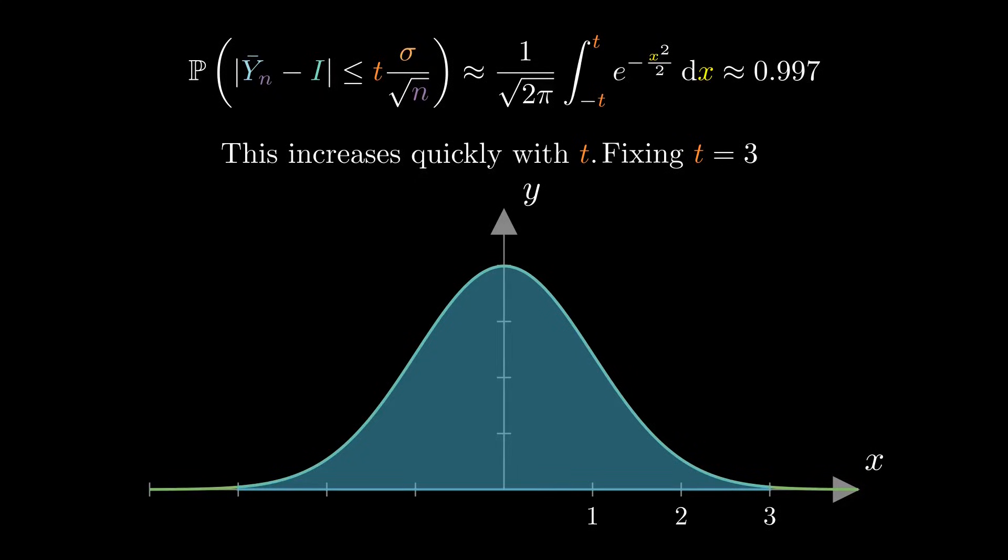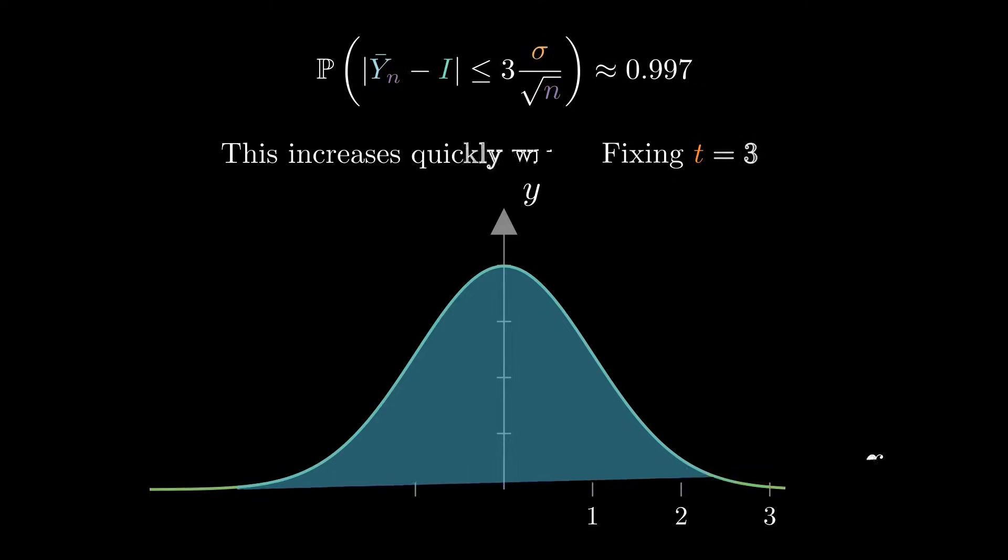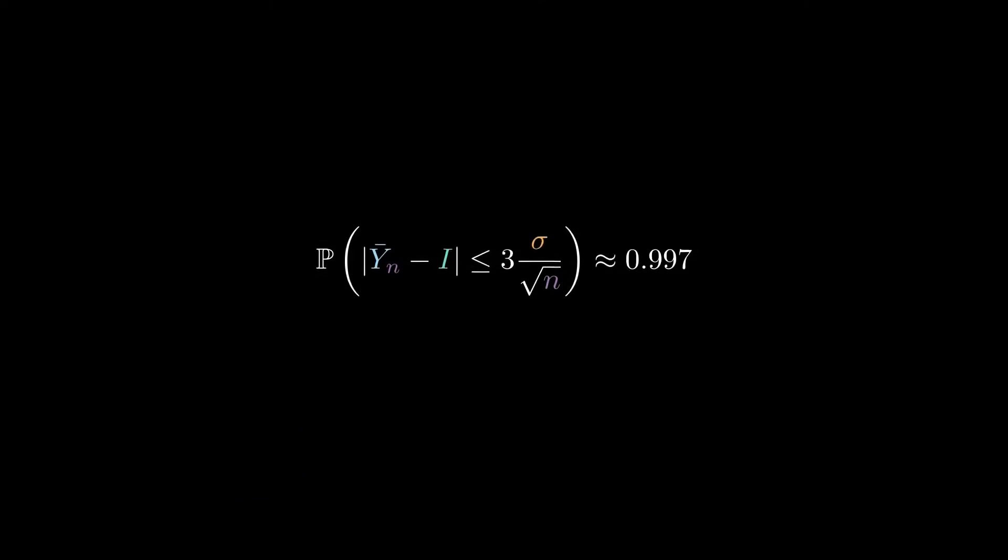For example, when t equals 3, the probability is approximately 99.7%. We can see that the upper bound of the error is inversely proportional to the square root of the number of samples.